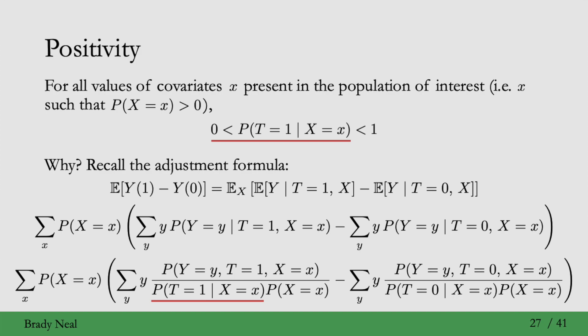Here, P(T=1 | X). If that were zero, which would be a positivity violation, then we would have division by zero. So satisfying the positivity assumption gives us a guarantee that we won't be dividing by zero, that our adjustment formula will be well defined.